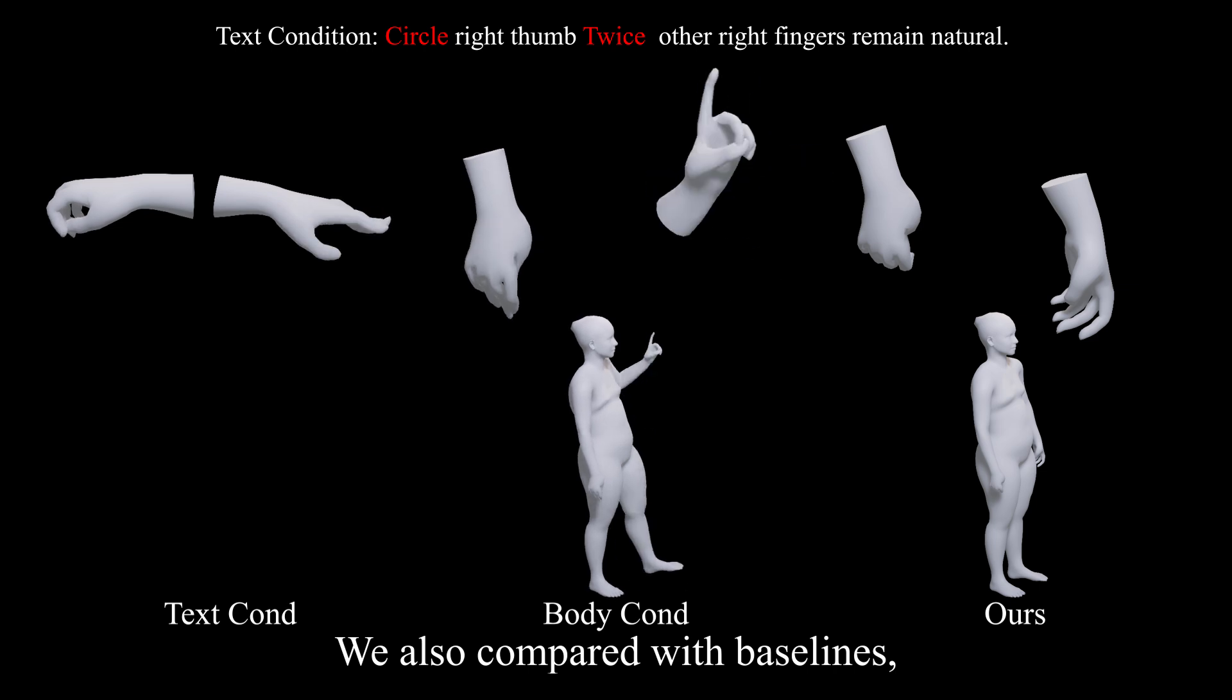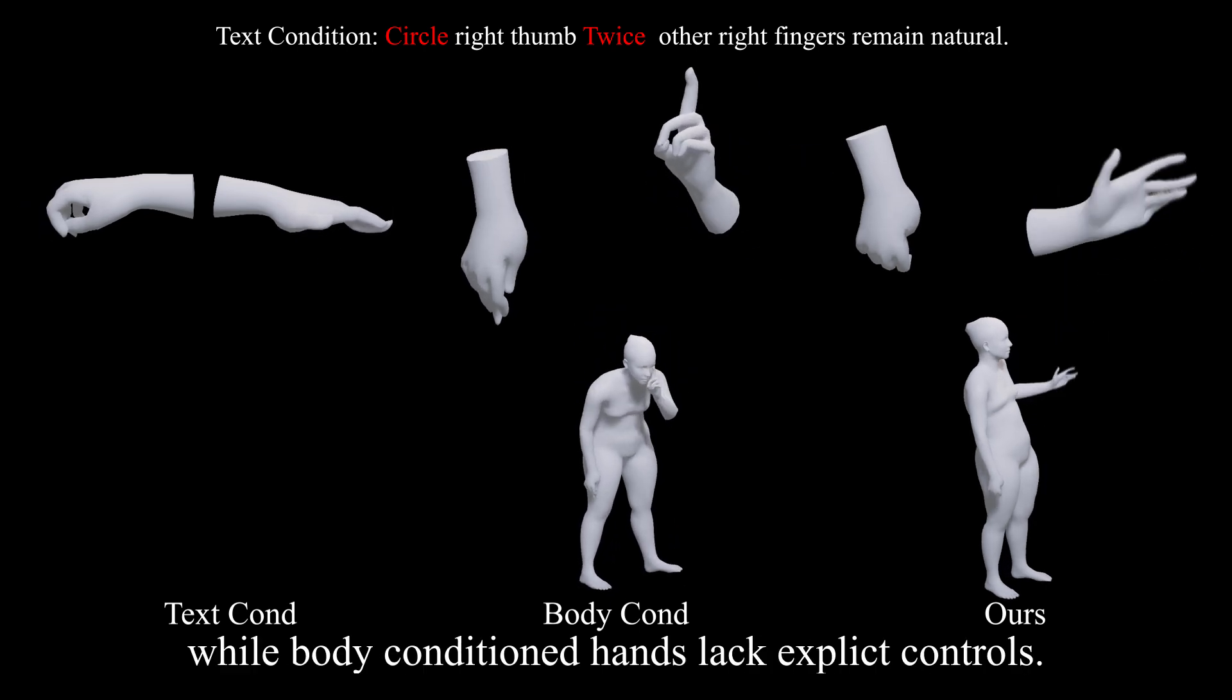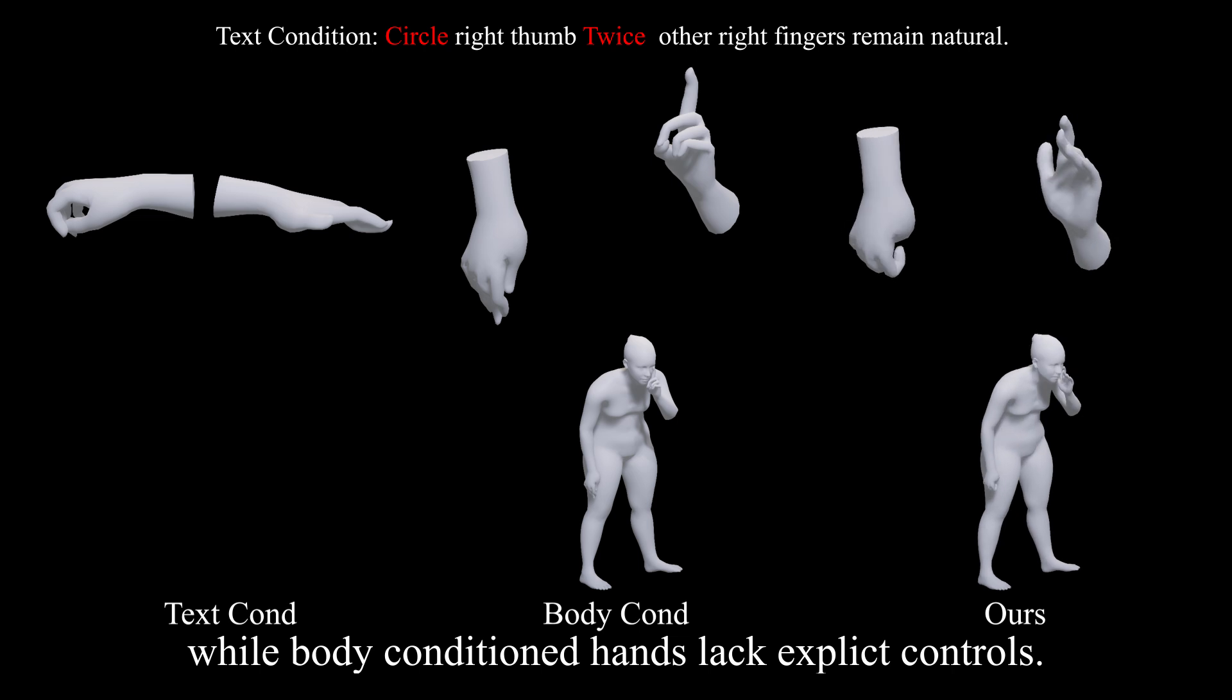We also compared with baselines. Text-conditioned hands are local hands while body-conditioned hands lack explicit controls.